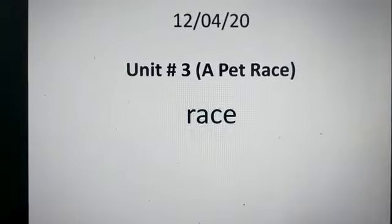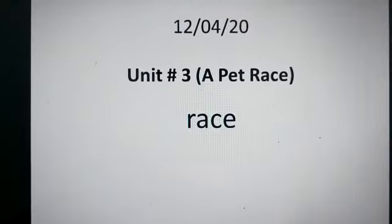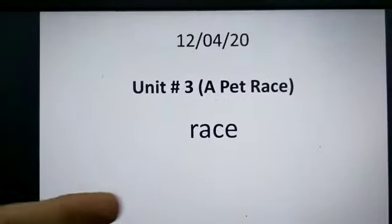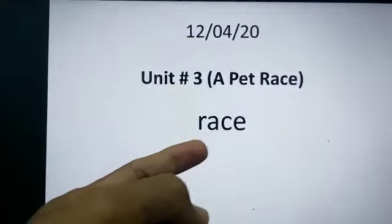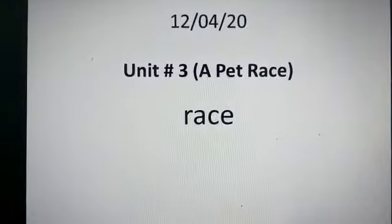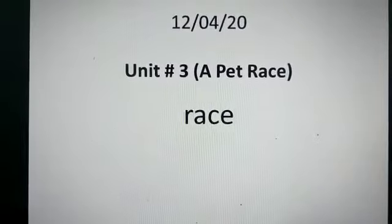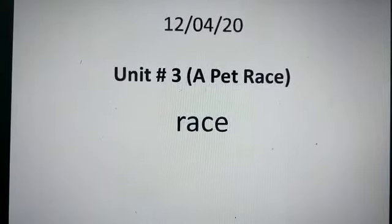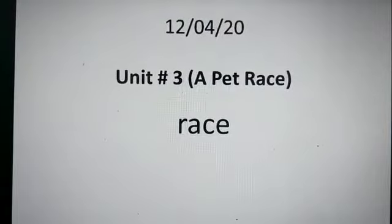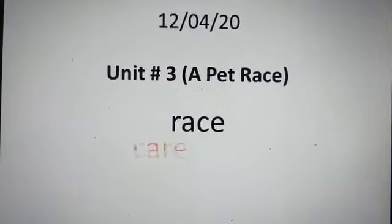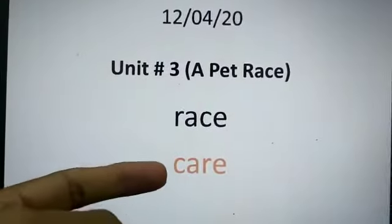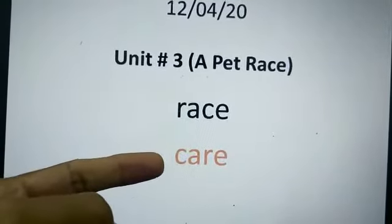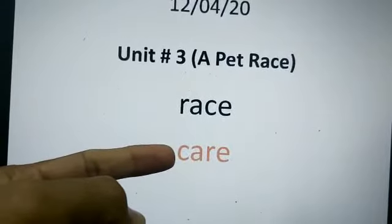I'll explain with some examples. The first word is race — R-A-C-E, four letters. We will make another word from this word race by rearranging these letters.